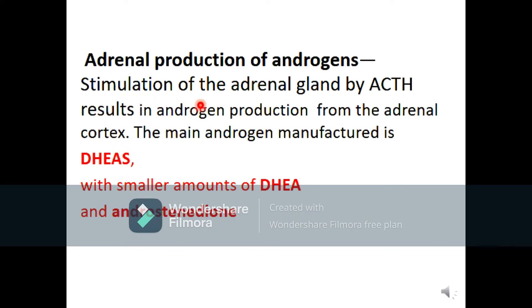Regarding adrenal production of androgens, stimulation of the adrenal gland by ACTH results in androgen production from the adrenal cortex. The main androgen from the adrenal cortex is DHEAS, with smaller amounts of DHEA and androstenedione.